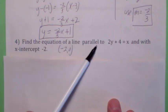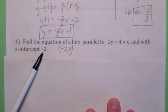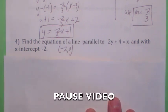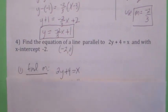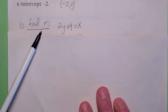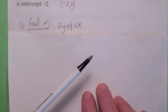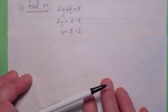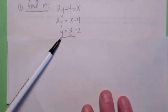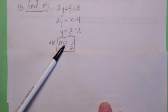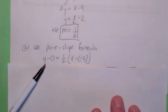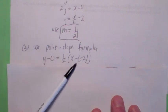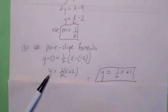Find the equation of a line that's parallel to this line and has x-intercept negative 2. Well, that's just a sneaky way of saying the point is negative 2, 0. First, find the slope of our line — it's parallel, so same slope as the given line. Solving for y gives y equals 1 half x minus 2, so the slope is 1 half. With point negative 2, 0 and slope 1 half, using point-slope: y minus 0 equals 1 half times (x minus negative 2), so x plus 2. Final answer: y equals 1 half x plus 1.